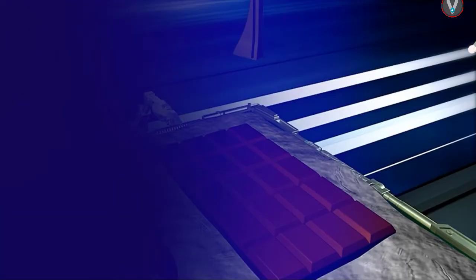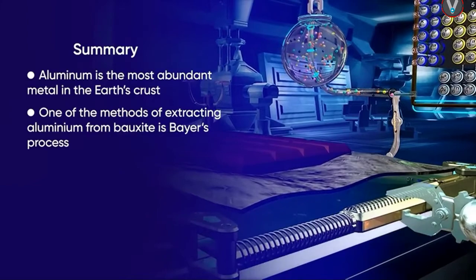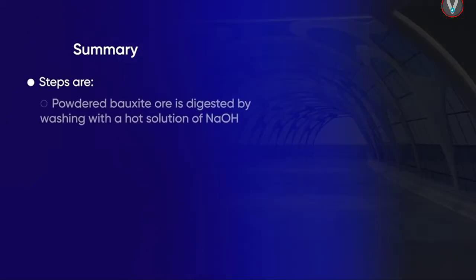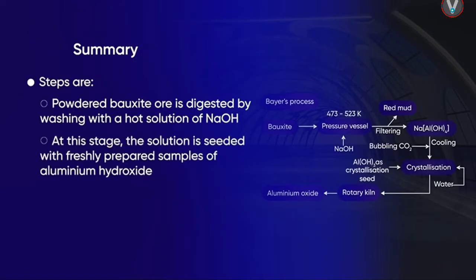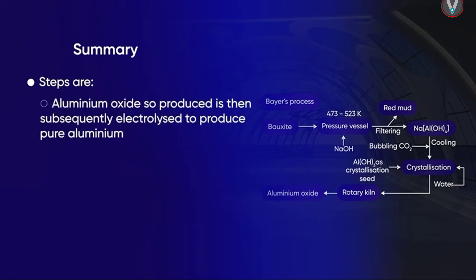To summarize: aluminium is the most abundant metal in the earth's crust. One of the methods of extracting aluminium from bauxite is the Bayer process. The steps are: 1. Powdered bauxite ore is digested by being washed with a hot solution of sodium hydroxide. 2. The solution is seeded with freshly prepared samples of aluminium hydroxide. 3. When heated, the aluminium hydroxide decomposes to form pure aluminium oxide. 4. The aluminium oxide so produced is then subsequently electrolyzed to produce pure aluminium.